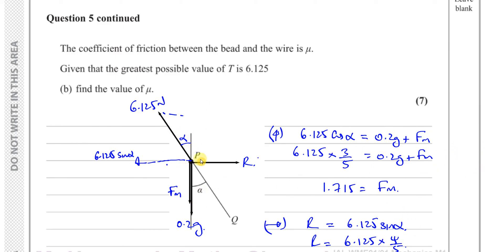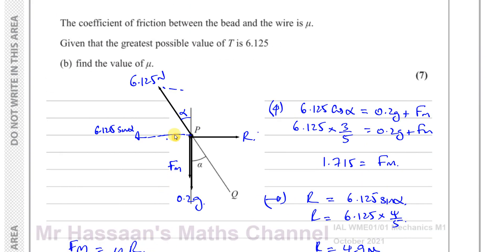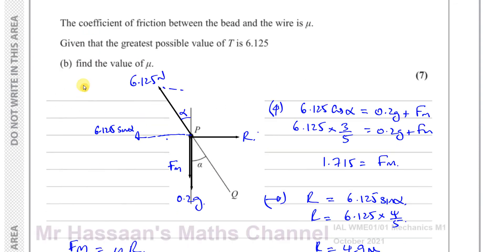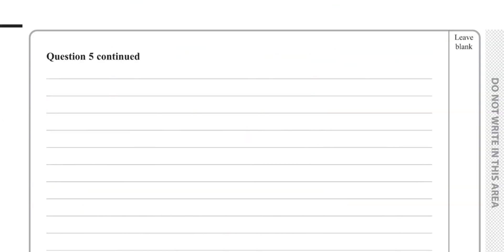To summarise part (b): we used F_max = μR. The bead is in limiting equilibrium about to slide up, so friction acts down the wire. Resolving vertically gave us F_max, and resolving horizontally gave us R — the reaction force perpendicular to the wire caused by the thrust pressing the bead against it. Dividing gives μ = 0.35.